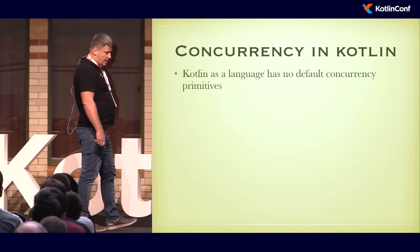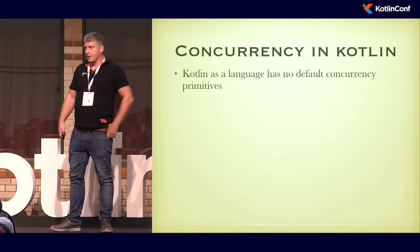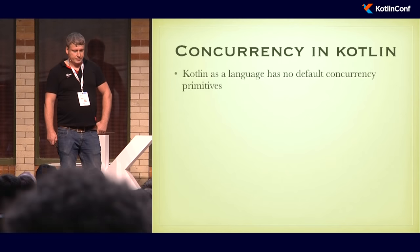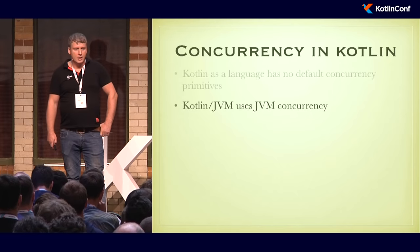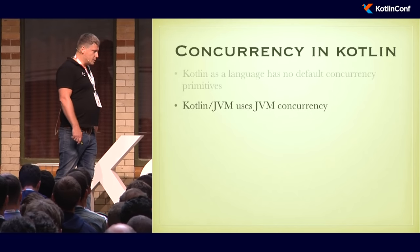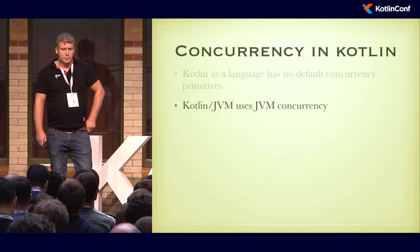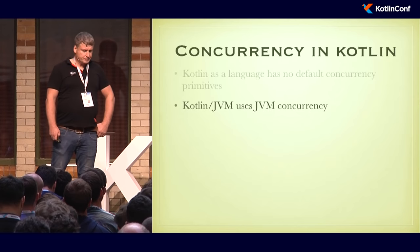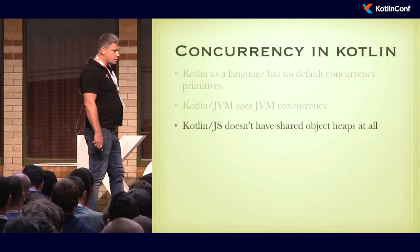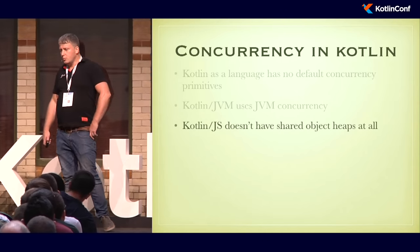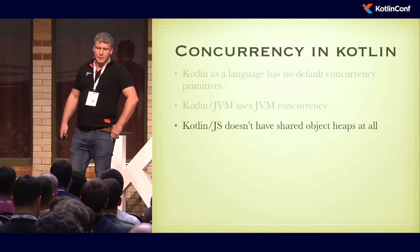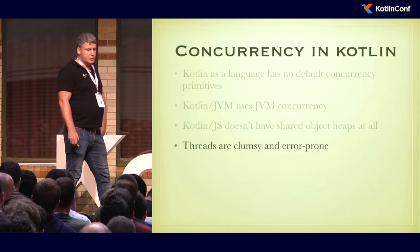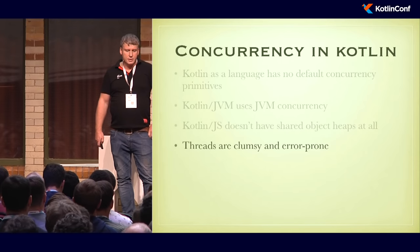We want to do that in the context of the Kotlin programming language. As you may know, Kotlin as a language — unlike particular flavors like Kotlin JVM, Kotlin JS, or Kotlin Native — doesn't have default concurrency primitives. On Kotlin JVM, we use JVM concurrency primitives such as threads, mutual exclusion primitives like synchronized blocks, events, and so on. On Kotlin JS, the situation is simpler because there is no shared heap between different workers.